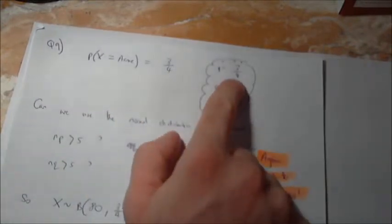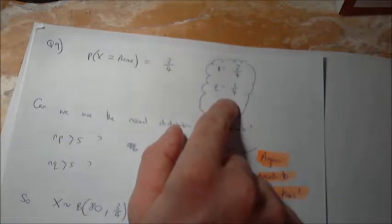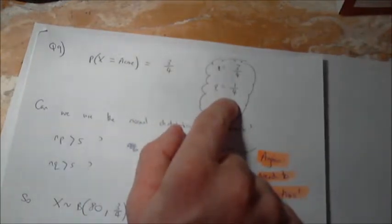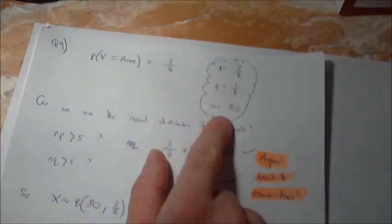So P is three quarters. That means Q is a quarter. Let's continue on. To test this claim, a researcher asks 80 people about their liking for Acme. So N is going to be 80.